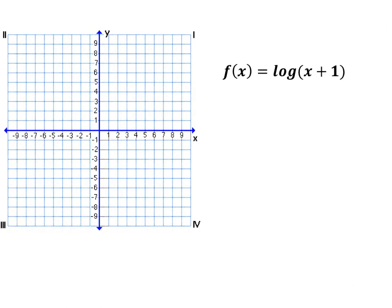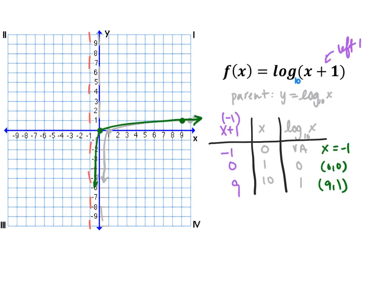Graph f(x) equals log(x+1) using transformations. The parent function is y equals log base 10 of x, with vertical asymptote x=0 and points (1,0) and (10,1). This function has been shifted left 1, so subtract 1 from all x-coordinates. The vertical asymptote is now at x equals negative 1, the point (1,0) moves to (0,0), and the point (10,1) moves to (9,1).